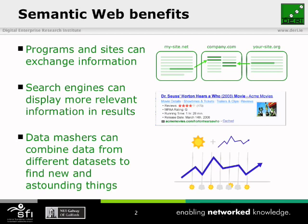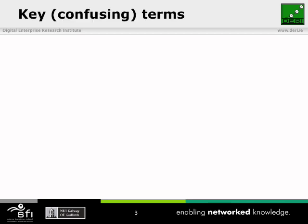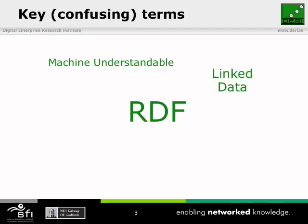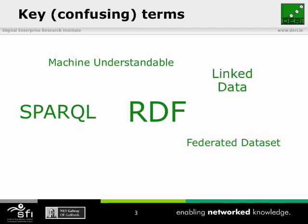I'm going to go over these key confusing terms now. I'll give a brief overview of them before diving into them more deeply. You have words like machine understandable, RDF, linked data, SPARQL, federated data sets, and giant global graph.